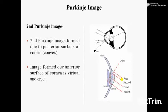Next, the 2nd Purkinje Image is formed due to the posterior surface of the cornea. The posterior surface of the cornea is also convex, because the shape of the cornea is convex. That is why the image formed due to the posterior surface of the cornea is virtual and erect.